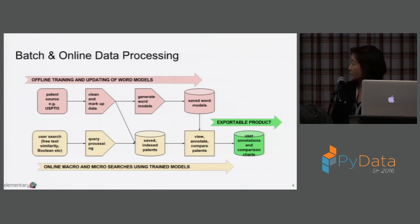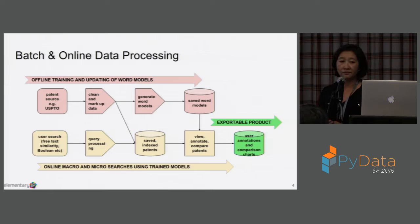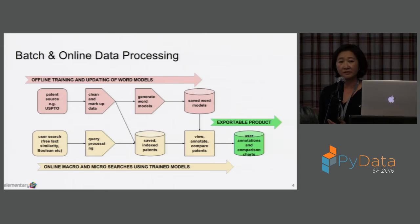Micro-searching is searching within the document — providing a side-by-side comparison of two patents. When we say those two patents are similar, the searcher wants to know how they are similar. Micro-searching provides a way for the application to identify to the user which area of the patents are similar, and the ability to highlight the similar areas within the patent — what we call similar sentences. That allows the patent searcher to quickly go through a large number of patents very quickly.